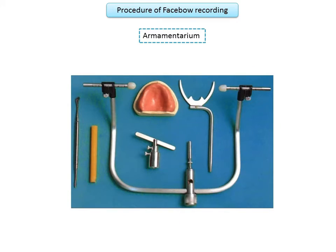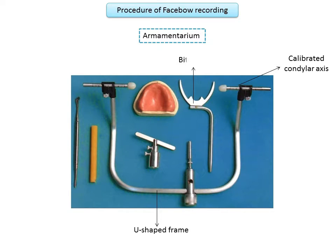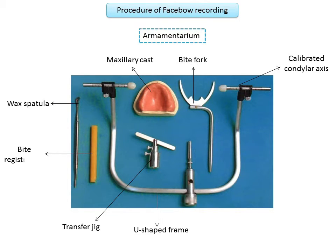Moving on to the procedure of facebow recording — first, the armamentarium. The facebow is made up of a U-shaped frame with a calibrated condylar axis at its two ends and earpieces at the terminal ends, which fit into the patient's ear like a stethoscope. There is a bite fork for bite registration, a transfer jig to transfer the facebow recording to the articulator, and the maxillary cast. If using a kinematic facebow, a mandibular cast, wax spatula, and bite registration wax are also needed.